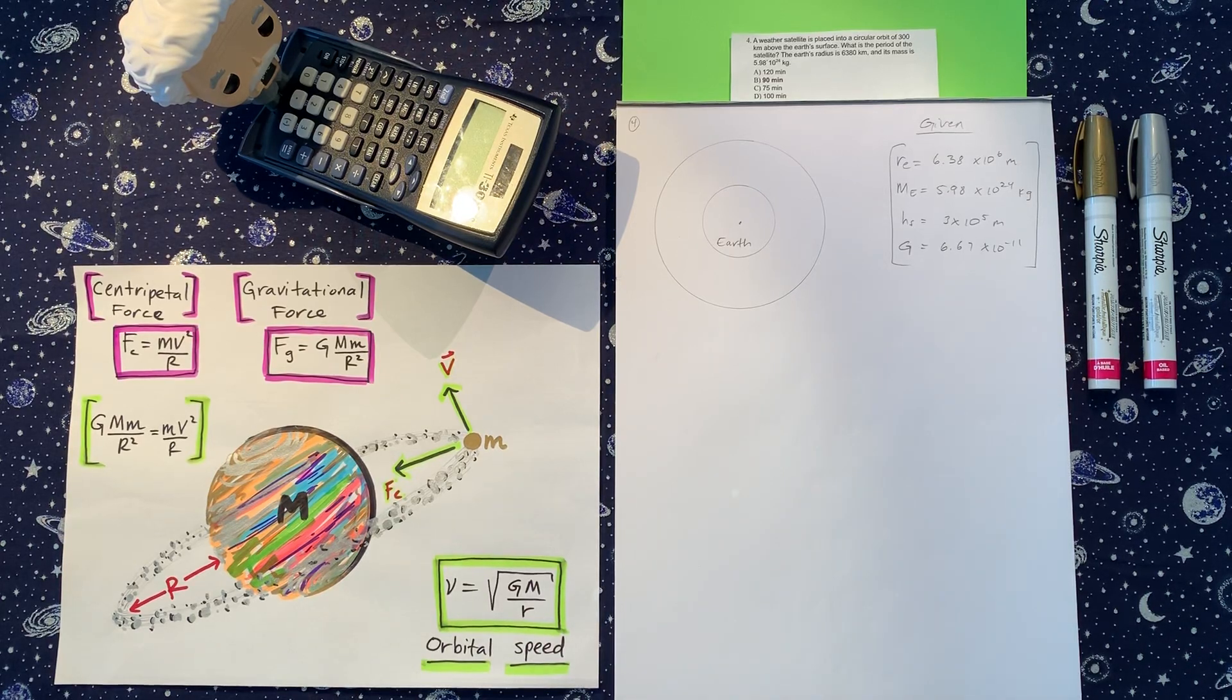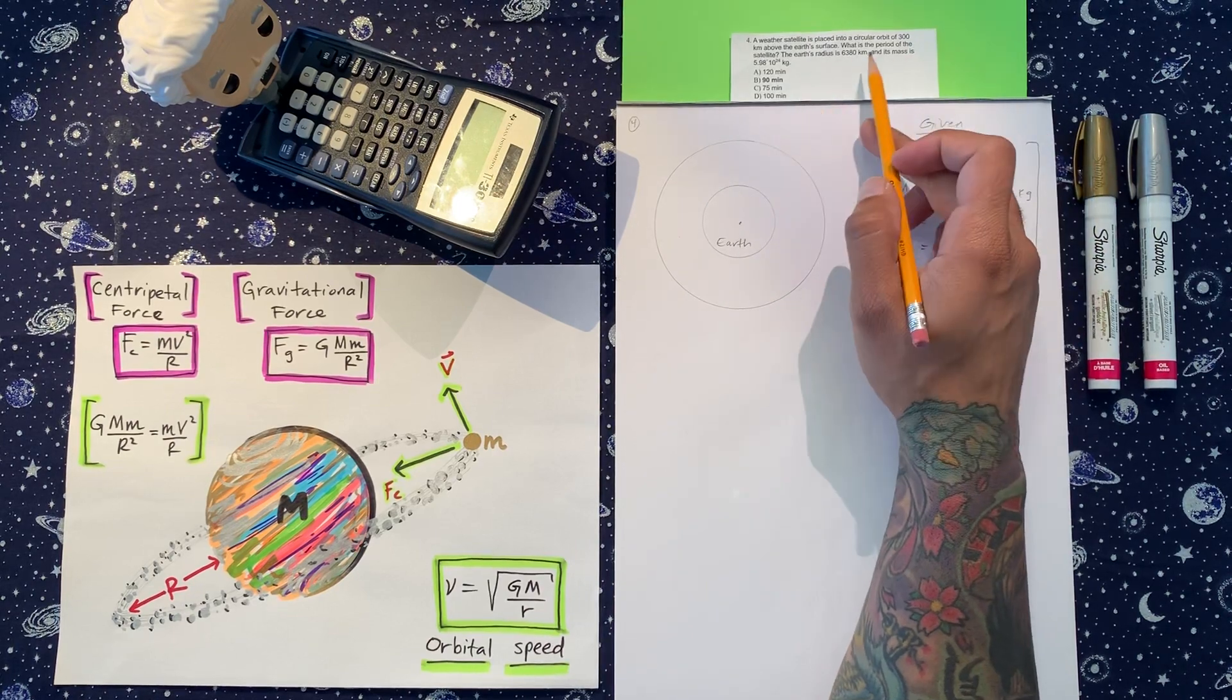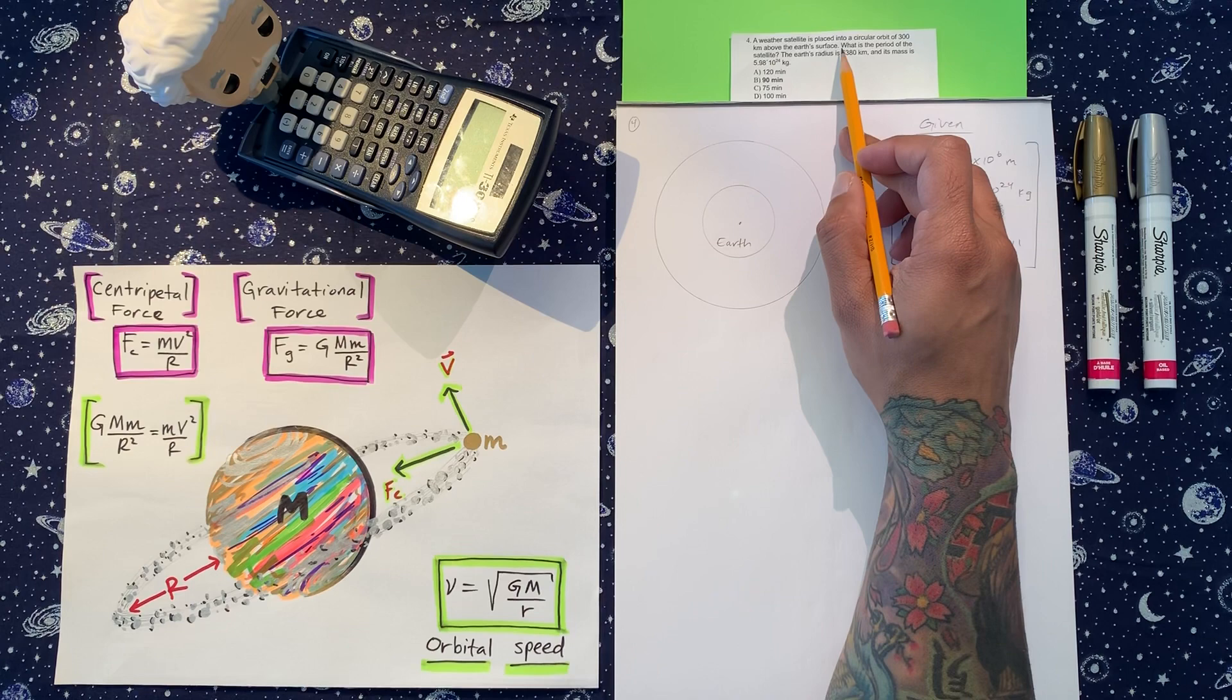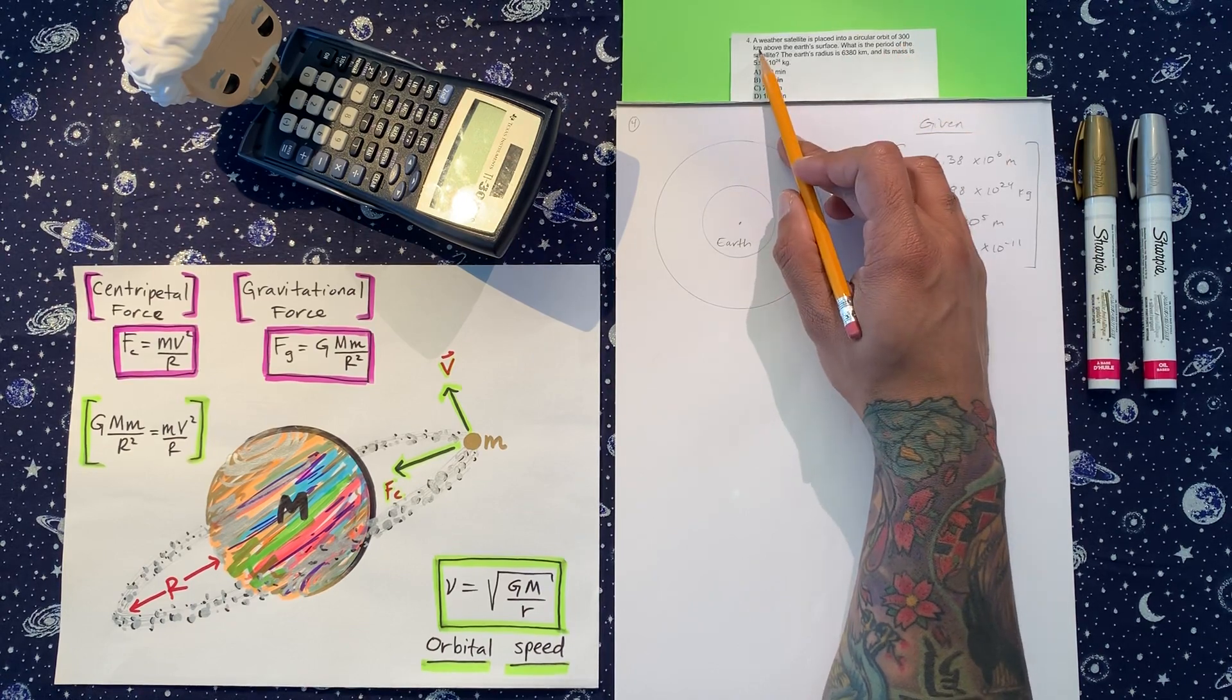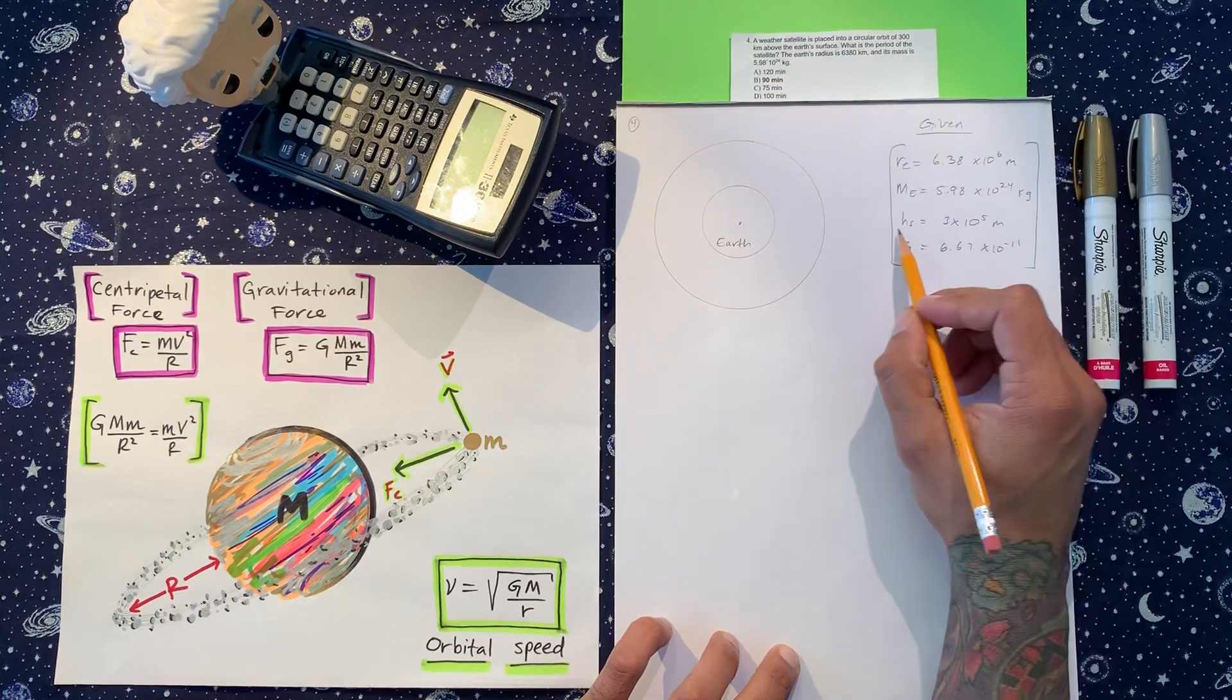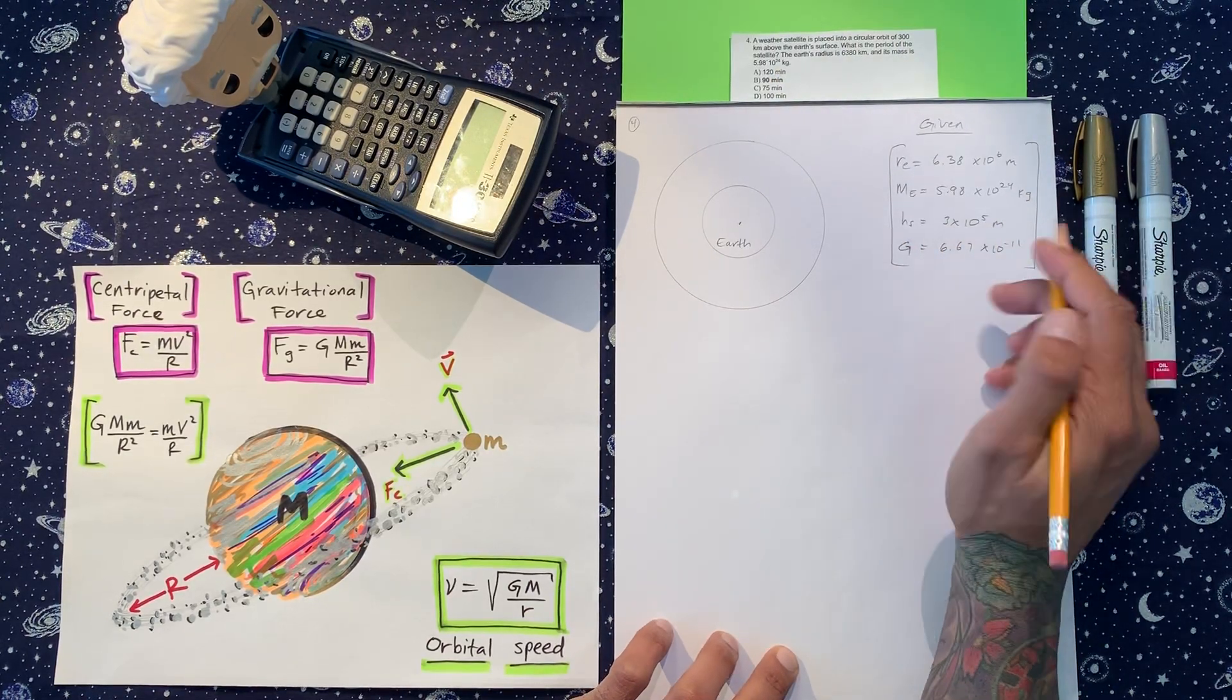All right, moving on to number four. This one right here got a couple tricks up its sleeve, so let's be cautious with this one a little bit. So we got a weather satellite is placed into circular orbit 300 kilometers above the Earth's surface. 300 kilometers, nice try. So the first thing is to convert 300 kilometers to meters, so we get three times 10 to the fifth meters.